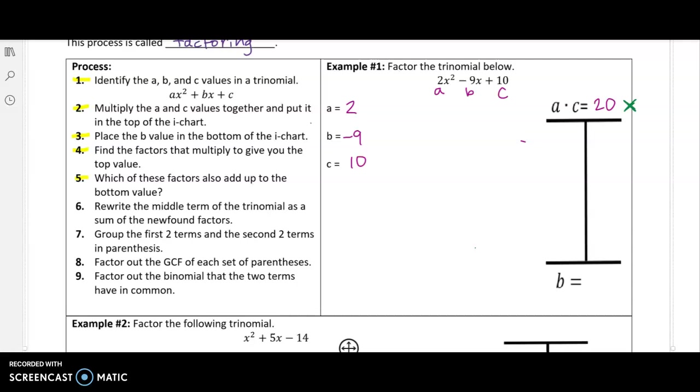And what do we list in our i chart? We list all of the products of 20. So all the things that multiply to give me 20. So for instance, one times 20, two times 10, four times five. But we also need to add at the bottom, our b value of the i chart. And our b value is the middle term, negative nine.